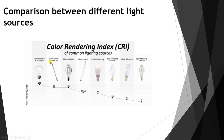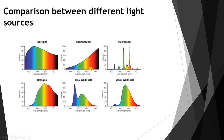Metal halide, fluorescent, mercury, and high-pressure sodium lamps each have lower Color Rendering Index values. Low-pressure sodium has the lowest CRI of all these sources, making it the worst light source in terms of color rendering quality.